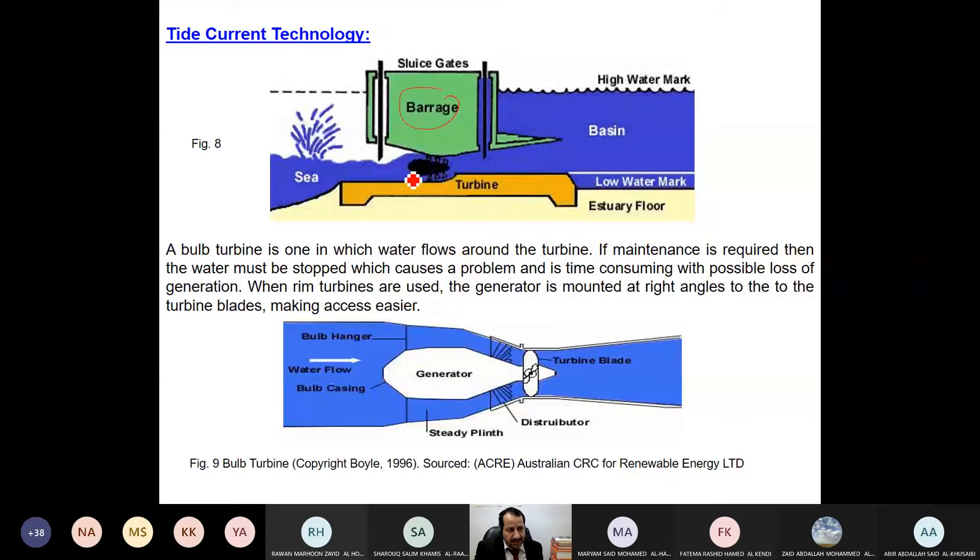This is the basin, this is the bridge, and this is the turbo generator. Water goes from this direction. Sometimes they make it bidirectional - water comes from this direction to the basin, the turbine rotates in one direction generating electricity, and when it goes back, it rotates in another direction also generating electricity. Here is the bulb turbine for tidal. You can see the generator and turbine with blades similar to wind turbine blades.